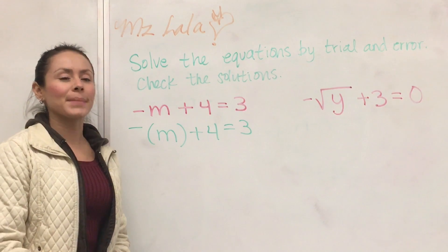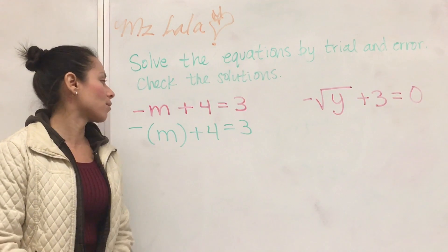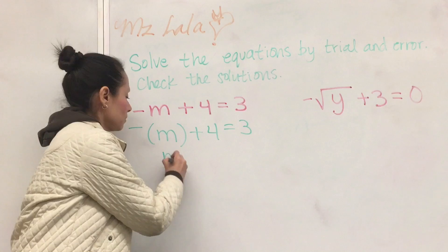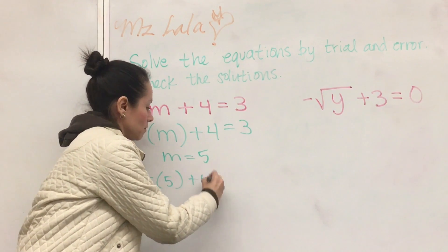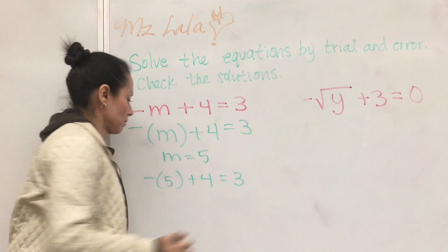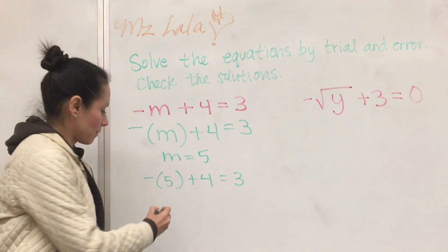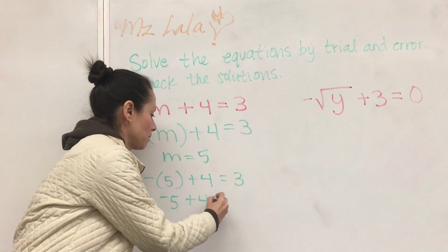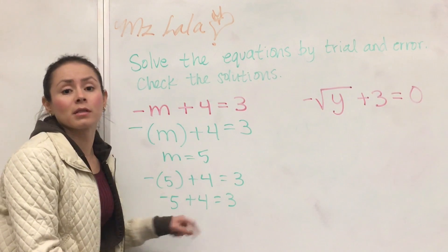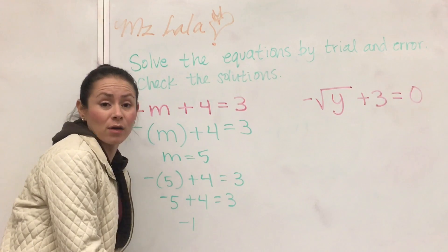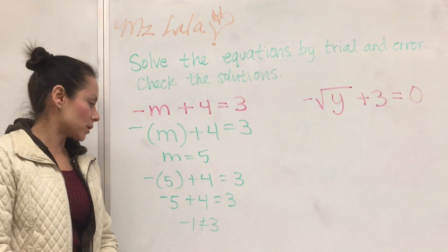So what can m be to make this a true statement? Let's just try a number. Let's try 5. So if you notice, we have the opposite of 5, which is negative 5. Negative 5 plus 4 is negative 1, which does not equal 3. So that cannot be a solution.